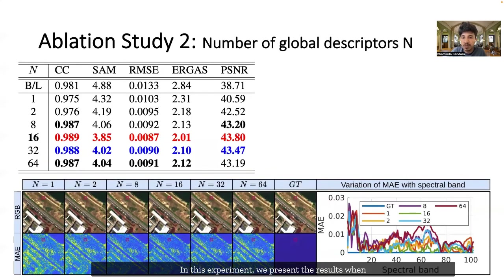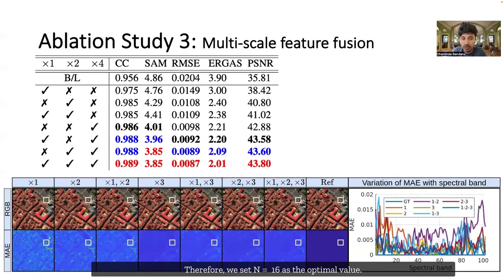In this experiment, we present the results when we increase the number of global descriptors in our hyper-transformer from 1 to 64. We can see that increasing the number of global descriptors results in significant improvement over the spatial and spectral performance measures. However, after N equals 16, the performance metrics start getting saturated. Therefore, we set N equals 16 as the optimal value.